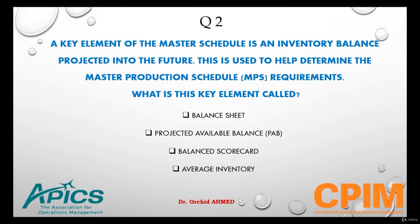Question 2. A key element of the master schedule is an inventory balance projected into the future. This is used to help determine the master production schedule requirement. What is this key element called? Balance Sheet, Projected Available Balance, Balanced Scorecard, or Average Inventory.